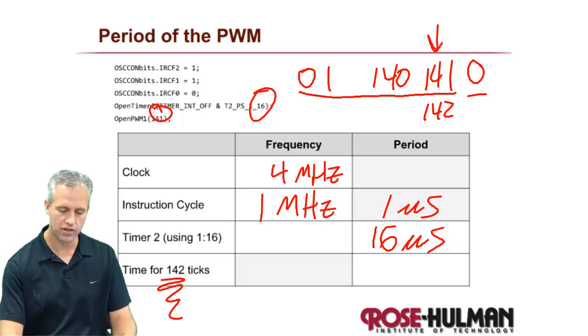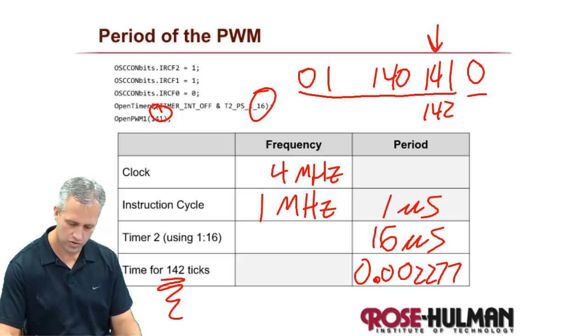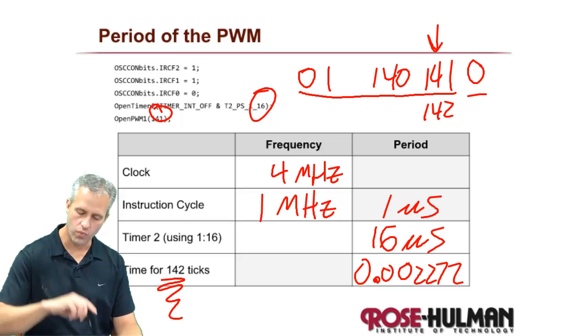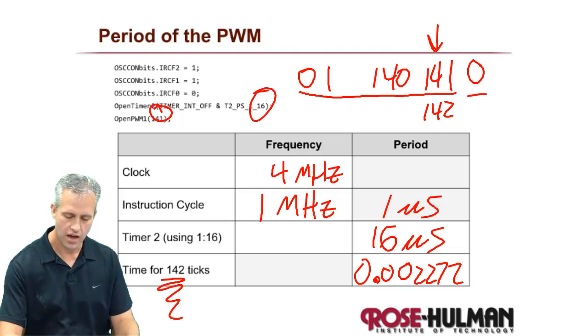Because what it does is it counts up and as soon as it sees a match, it sees a match like 141, then it says that's a match, and then it'll roll over. And if you notice that by counting starting at 0, you actually get 142 total ticks. So if we take 16 microseconds times 142, that appears to be 0.002272. Which if you then do a 1 over of that, so that's how long it is between rising edges, it is 440 Hz.